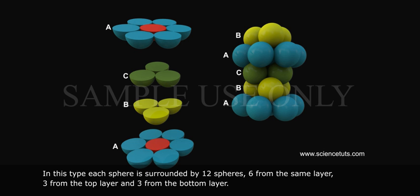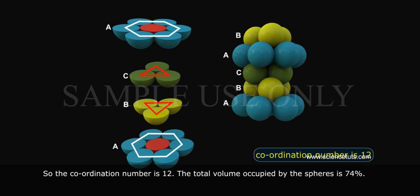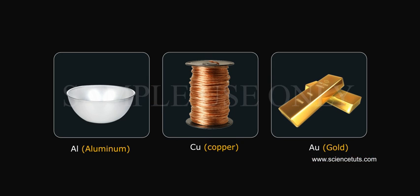In this type, each sphere is surrounded by 12 spheres: 6 from the same layer, 3 from the top layer, and 3 from the bottom layer. So the coordination number is 12. The total volume occupied by the spheres is 74%.